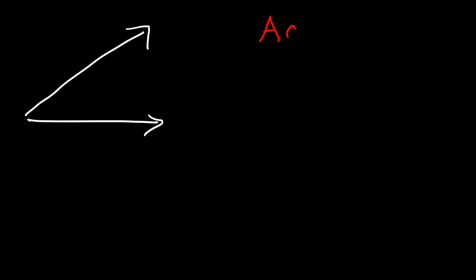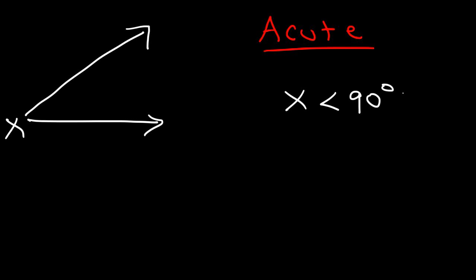So what exactly is an acute angle? Let's start with a picture. An acute angle is an angle that is less than 90 degrees. So let's say x represents the angle — x is going to be less than 90 degrees.